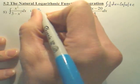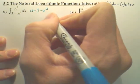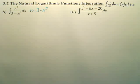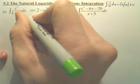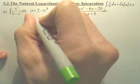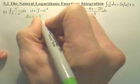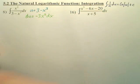u is going to be 3 minus x cubed. When we derive that, we're going to get du equals negative 3x squared dx.